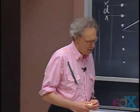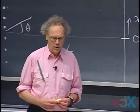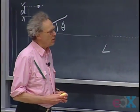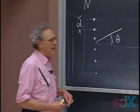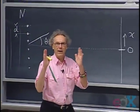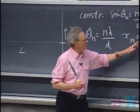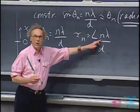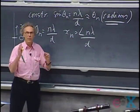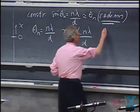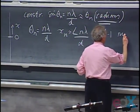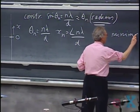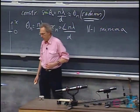But now comes the big surprise. We haven't discussed yet where light plus light gives darkness — the destructive interference. To derive that properly is very tricky. If you take 8.03, you will see a perfect derivation. But I will give you the results.